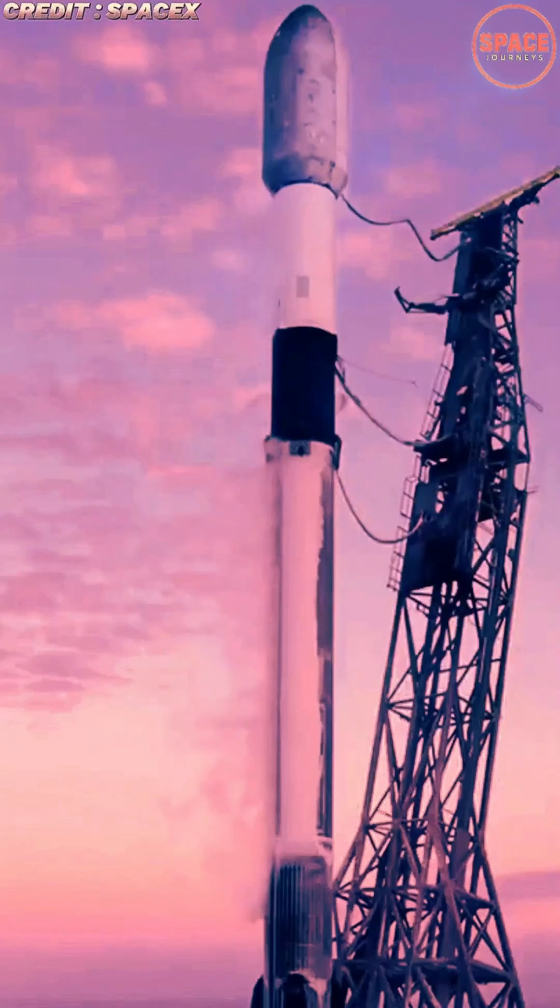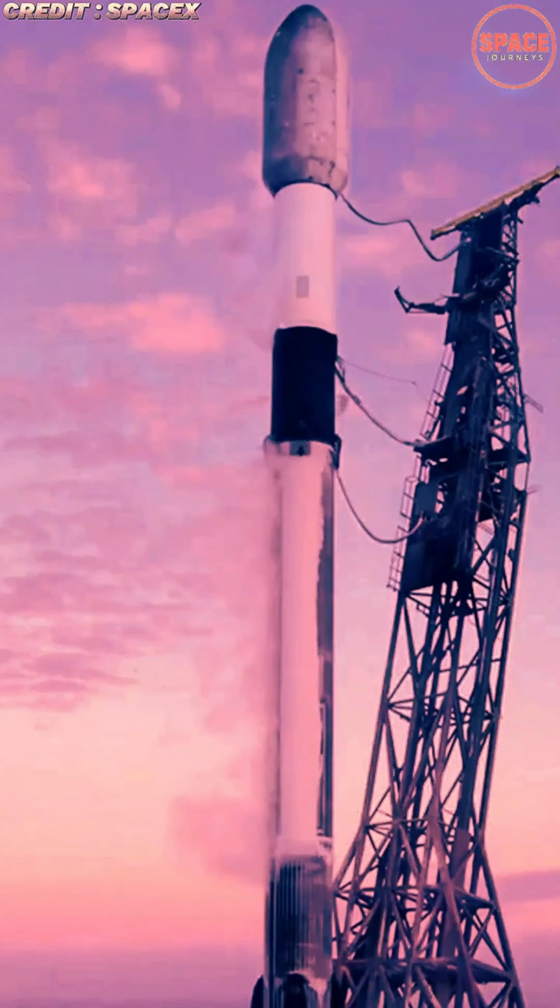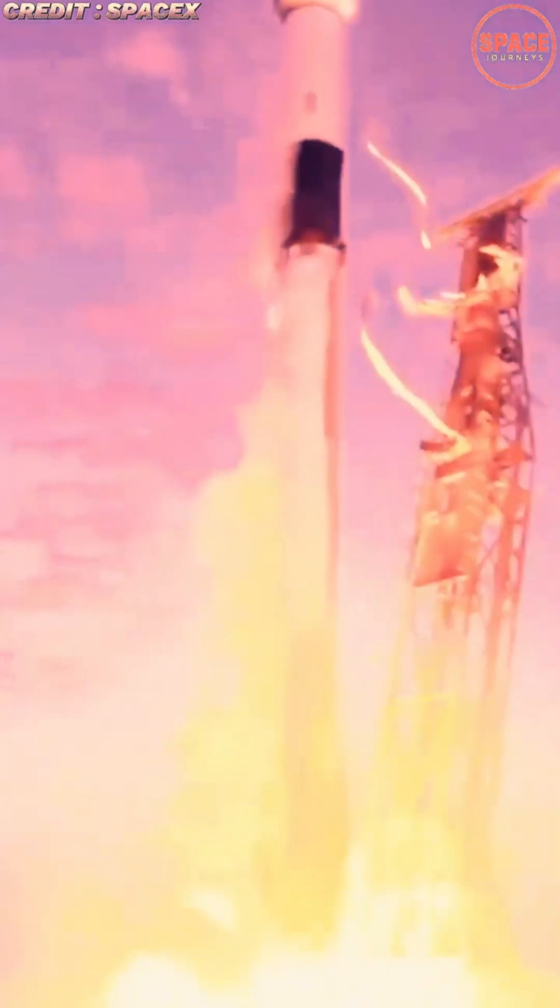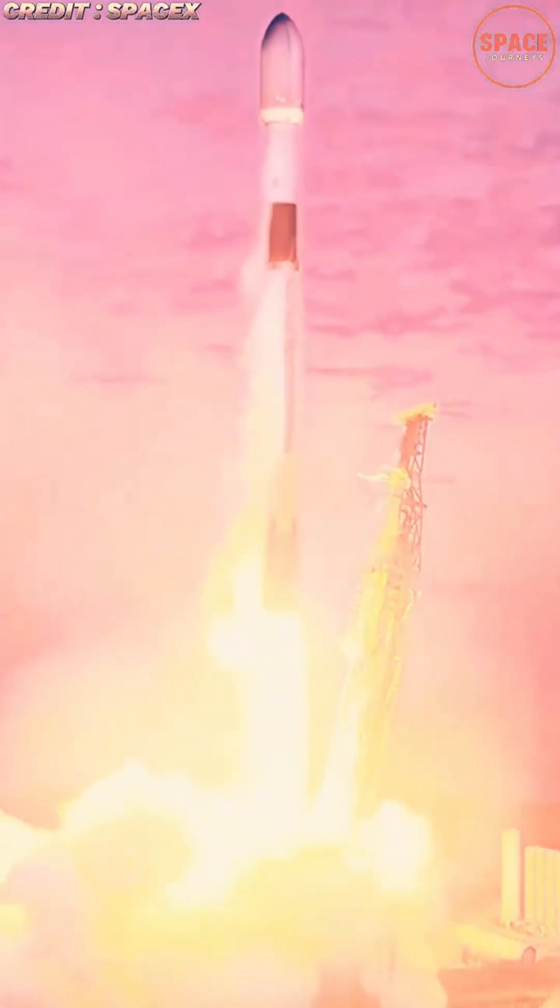SpaceX successfully launched another batch of 28 Starlink satellites from California on Thursday, continuing its rapid pace of expanding the company's ever-growing global broadband network. The launch took place from Vandenberg Space Force Base, where a Falcon 9 rocket lifted off into clear skies at 7:45 PM local time.